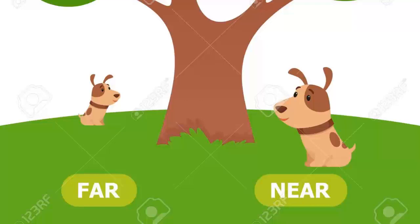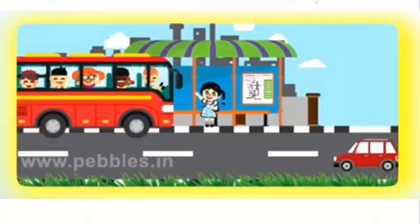For example, there is a school bus coming and a child is waiting at the bus stop. The bus is near the bus stop — the girl is able to see the bus because it is very close to her. Can you see a car there? Yes, it is a tiny little red car. The car is far from the bus stop because it is at a longer distance — the girl has to go far away to catch the car. So the car is far from the bus stop whereas the bus is near.